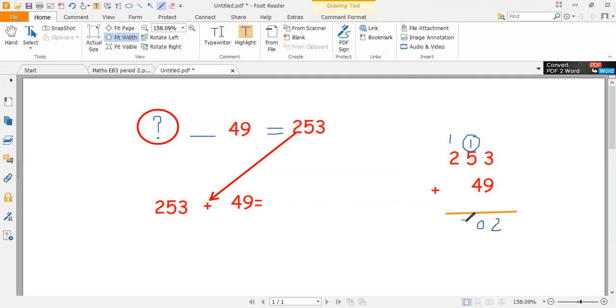Now, one plus two is three. So the answer is 302.